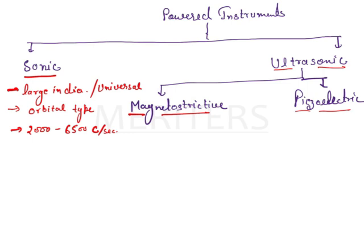Coming to the ultrasonic instrument, we have two types — this is very important. First, the magnetostrictive instrument. In this, they generally ask about the pattern of vibration of the tip. The pattern of vibration is basically elliptical, and there are four active sites.